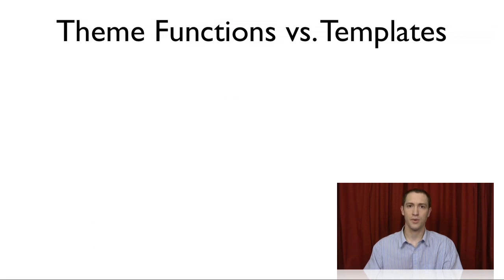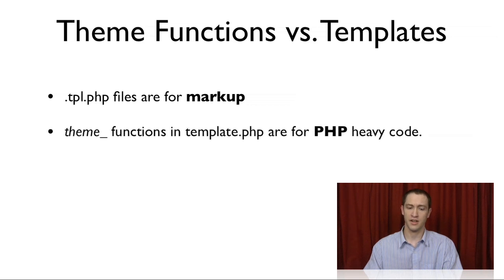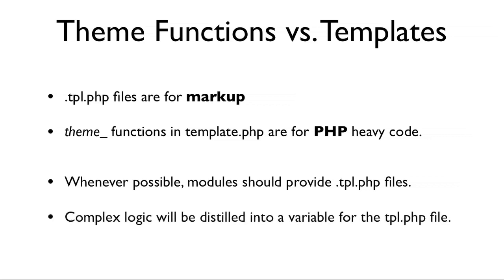In general, there are two possible ways to output content in Drupal: theme functions and template files. The tpl.php files from the first video are almost always specifically for markup — they contain almost all HTML and small bits of PHP. Theme functions, on the other hand, live in template.php and are specifically for PHP-heavy code where only a small amount of markup is output. Whenever possible, modules should provide tpl.php files to make it easier on the themer. If complex logic is needed inside a tpl.php file, usually this logic will be distilled into a single variable and passed along to the tpl.php file, so the themer simply has to print out the output.